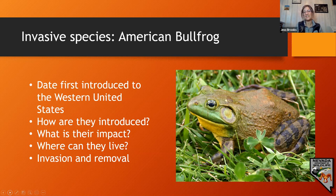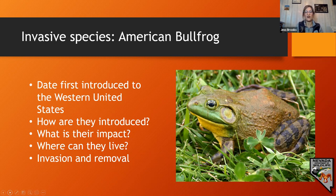American bullfrogs will eat anything they think they can get their mouths over, including small rodents, birds, other frogs, and other toads. This gives them a detrimental impact on threatened and endangered species or state-listed species of special concern. They've even been shown to be cannibalistic when other food is difficult to find.